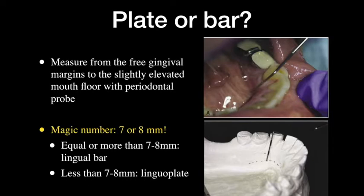How do we select between a lingual bar and a lingual plate? First, measure from the gingival margin of the tooth to the slightly elevated mouth floor with a periodontal probe — ask the patient to raise the tongue so the mouth floor is lifted, then measure. Remember the magic number: 7 or 8 millimeters. If you have 7, 8, or more, you will likely choose the lingual bar. If you have less than that, you must choose the lingual plate.